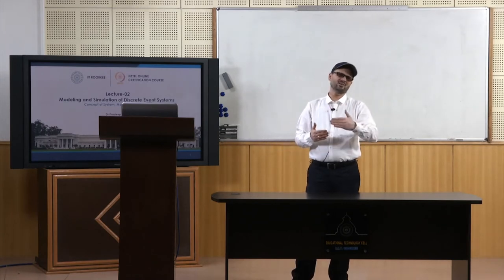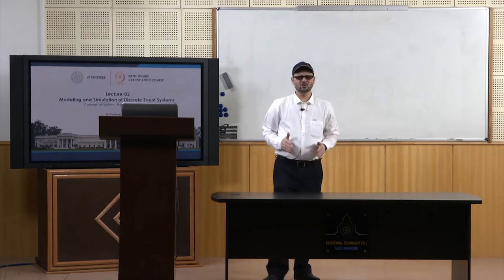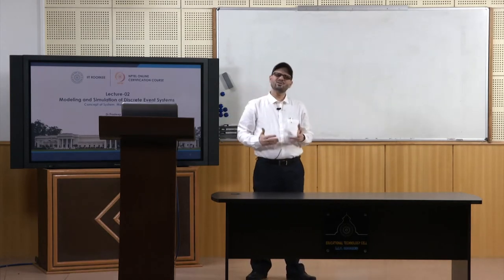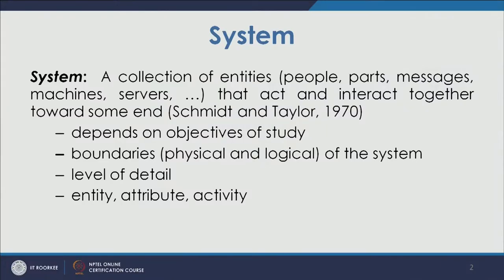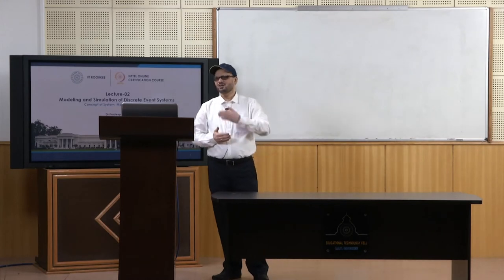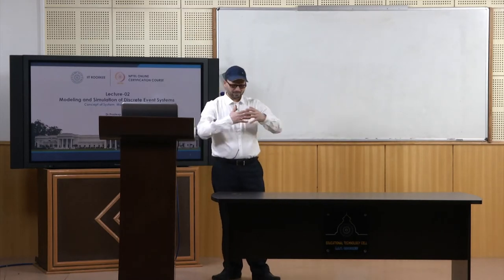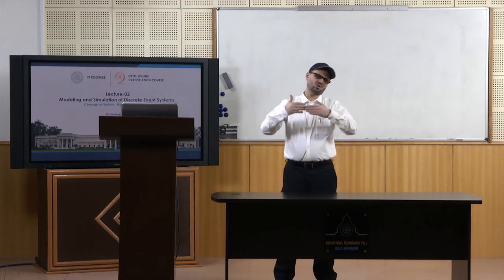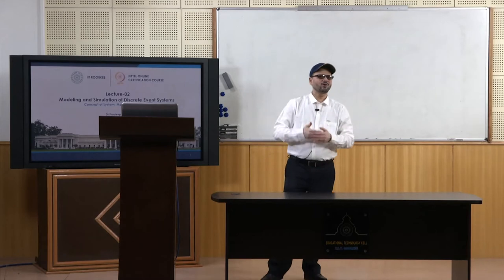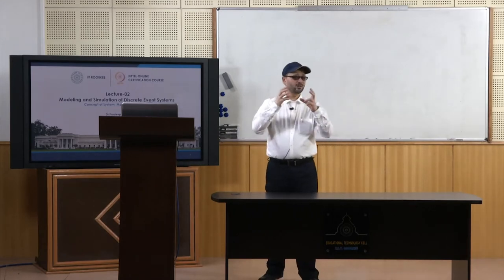In a bank we study the behavior of customer movement, the behavior of persons standing in a queue, and how they get service. A system is defined as a collection of entities — it may be people, parts, messages, machines, or servers — which are acting and interacting together towards some end.